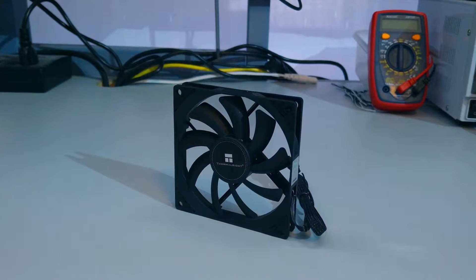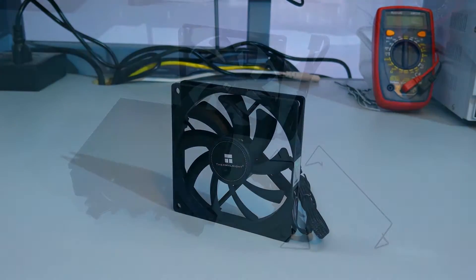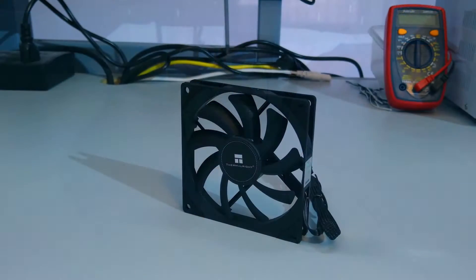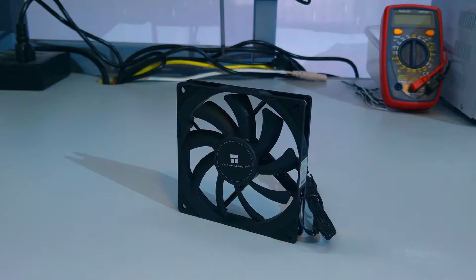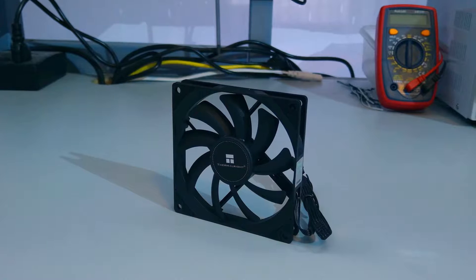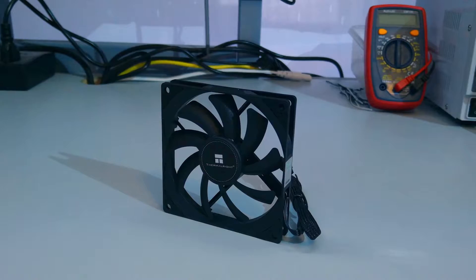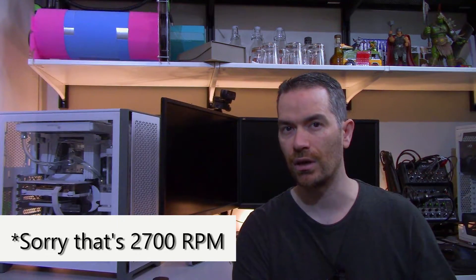Looking at the fan first, it has a single 90 millimeter fan, which clips onto the top of the heat sink with two metal clips. This fan is a four pin PWM fan. There are rubber pads on each corner of the fan. This should help a little with vibrations. Now it did say on the box that this fan has a max rated RPM of 1700. I will confirm this later on in the video when I do the PWM range testing.